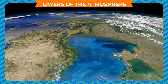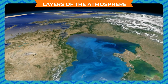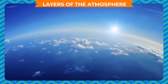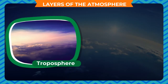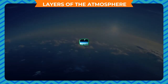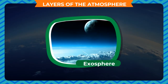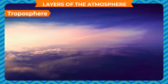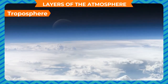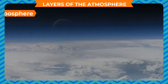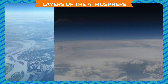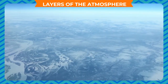Layers of the atmosphere: the atmosphere of the earth is comprised of different layers based on temperature variation. These layers are the troposphere, stratosphere, mesosphere, ionosphere, and exosphere. The troposphere is the lowest part of the atmosphere — the part we live in. It contains most of our weather: clouds, rain, snow, etc. In this layer, the temperature gradually decreases as we go up.